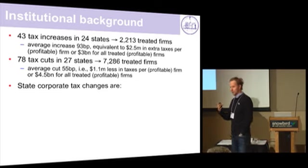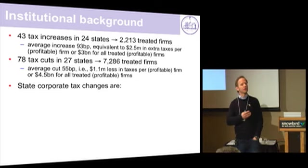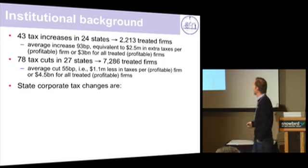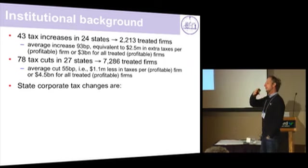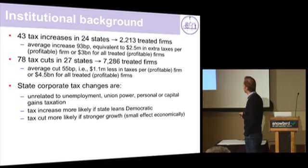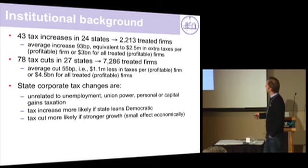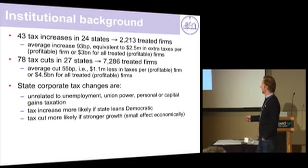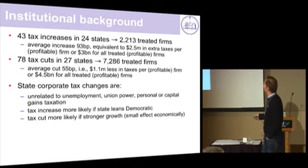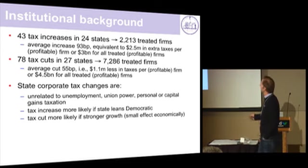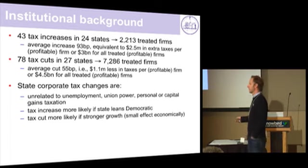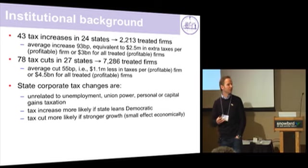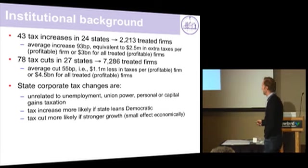We dig into why states change their taxes. We run the tax change of the state as the left-hand side variable and see whether it's correlated with anything. It doesn't seem to relate to unemployment, union power, or personal capital gains taxation. There's a little evidence that if the state leans Democratic, it's more likely to increase taxes, which makes sense. And there's some evidence that if the state has experienced growth, it's likely to cut taxes. These are things we need to control for in our regressions.